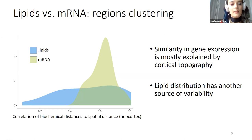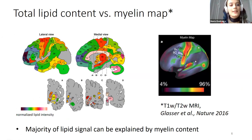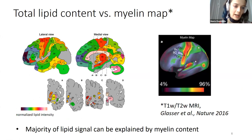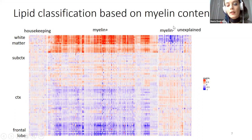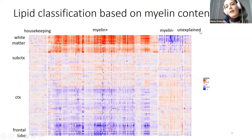We looked for another factor to explain the lipid differences, and that factor turned out to be the myelin content of the brain. When we plot the overall lipid content from our data, it closely resembles the myelin map measured using structural MRI. We used myelin as a factor to classify lipids based on their behavior. Myelin-correlated lipids are the most abundant group, but there are also lipids anti-correlated with myelin, housekeeping lipids with flat profiles, and a small cluster with specific regional profiles unexplained by myelin.